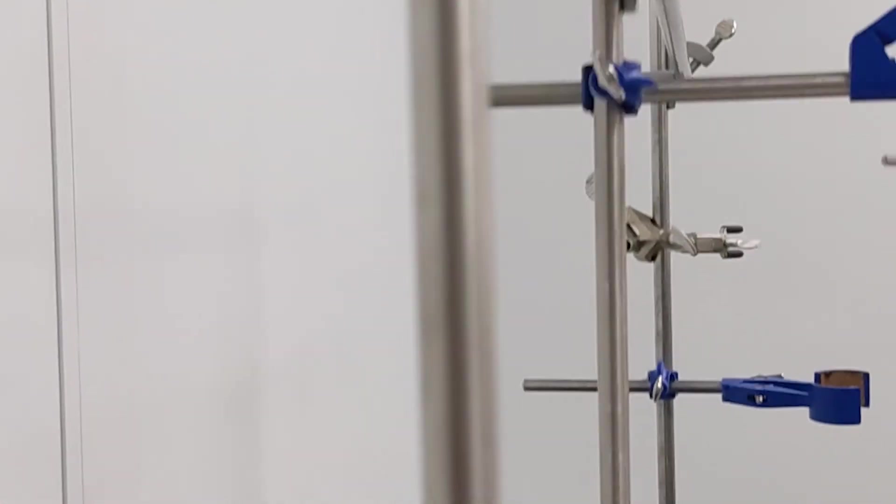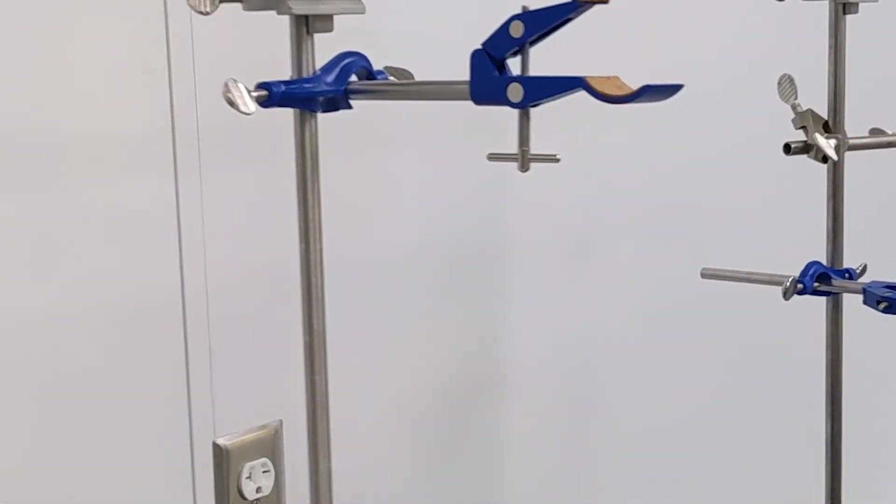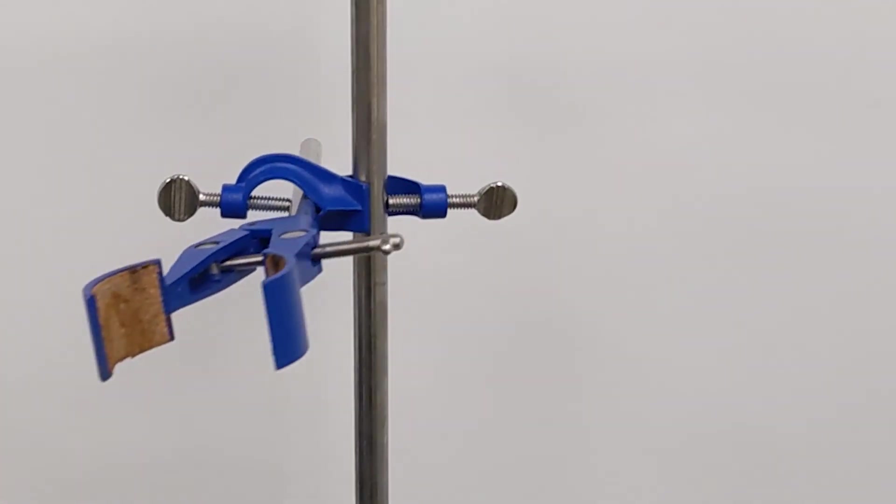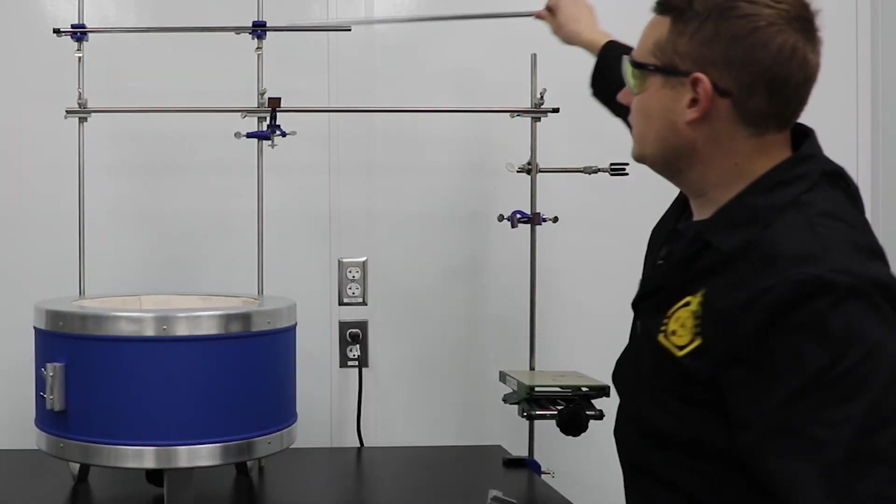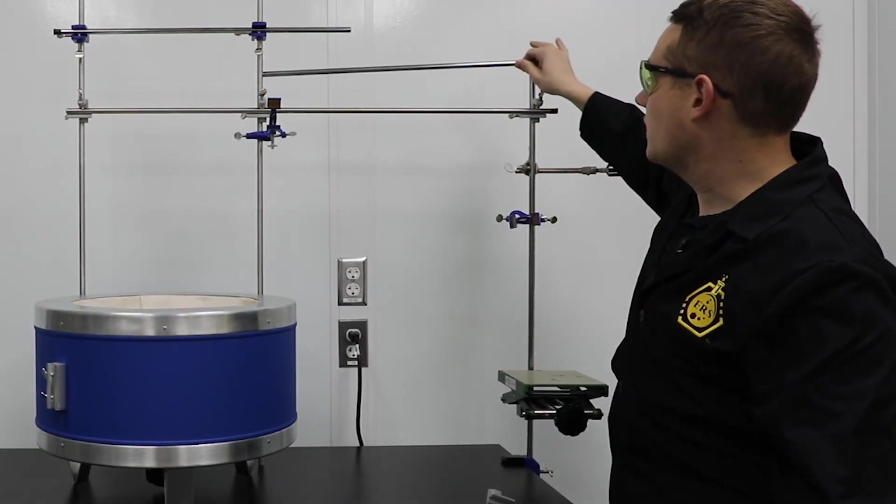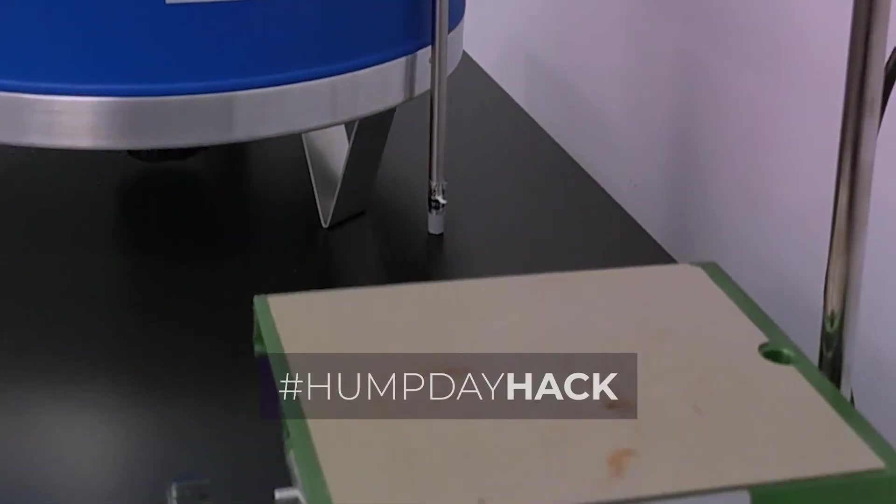So that pretty much concludes setting up the system. At this point you can choose to add other cross members on. You can do all sorts of different things. So something I might do to this system is add another one right here just so I've got the full support or I could add it lower. I can do whatever I want. And that will conclude today's hump day hack.